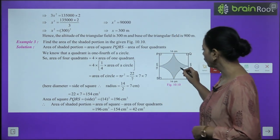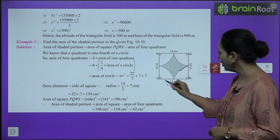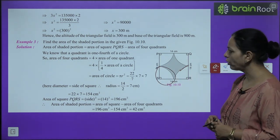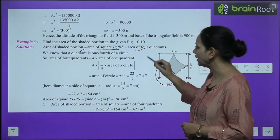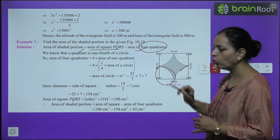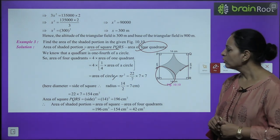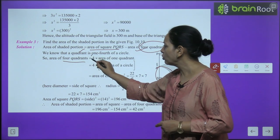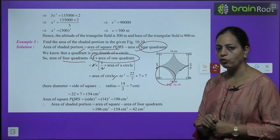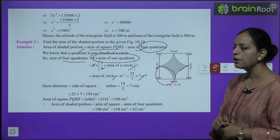Example 3: Find the area of the shaded portion in a figure where a 14 cm square has four quadrants of a circle (one at each corner). Area of shaded portion = area of square − area of 4 quadrants. Four quadrants make one complete circle, so area of 4 quadrants = area of circle = πr². Here diameter = 14 cm, so r = 7 cm. Area of circle = (22/7) × 49 = 154 cm². Area of square = 14 × 14 = 196 cm². Shaded area = 196 − 154 = 42 cm².